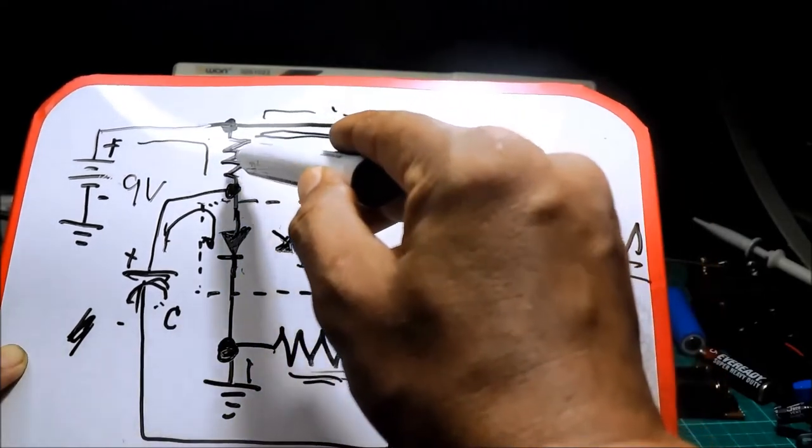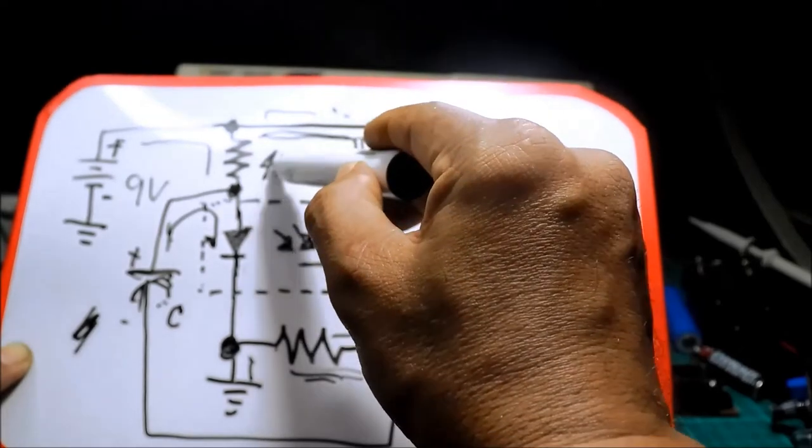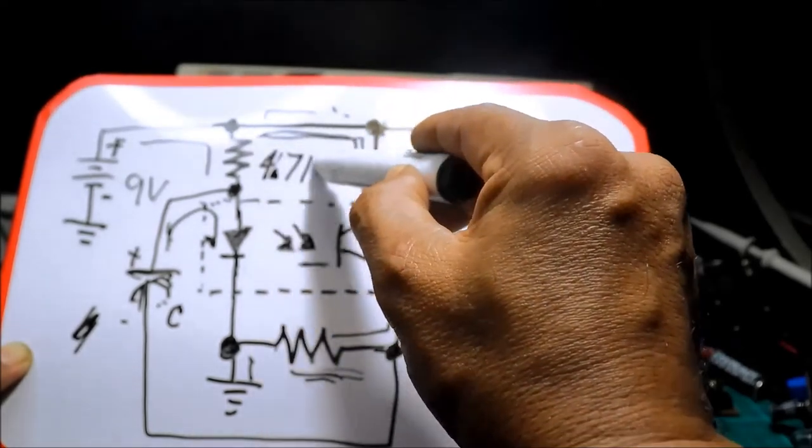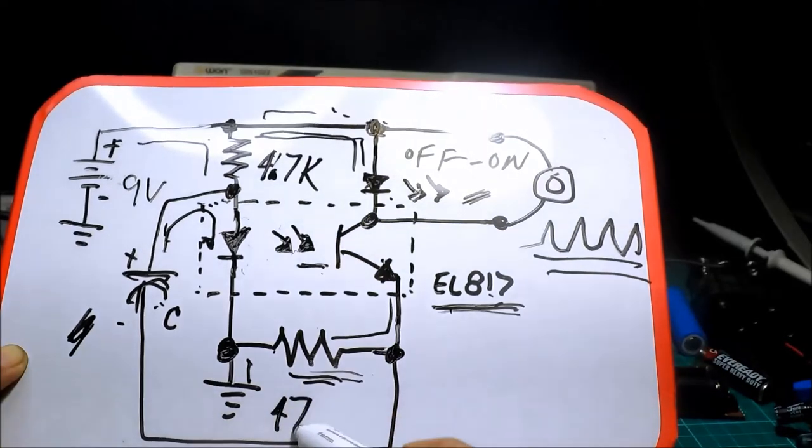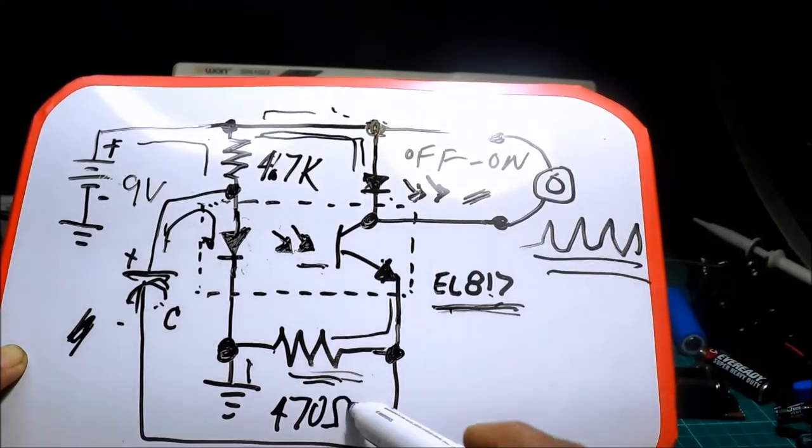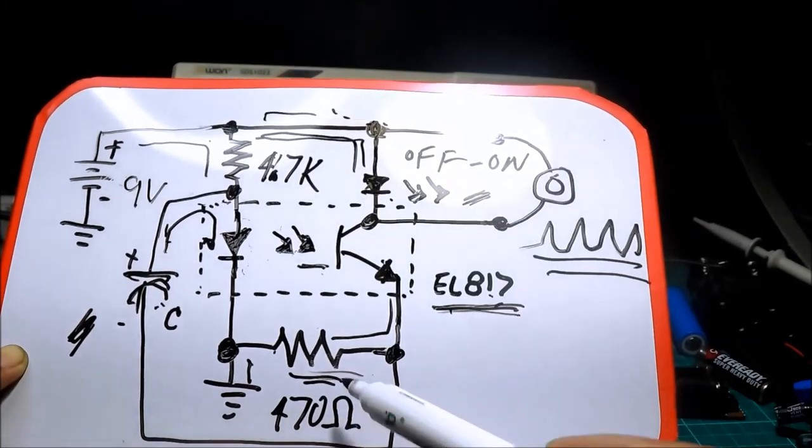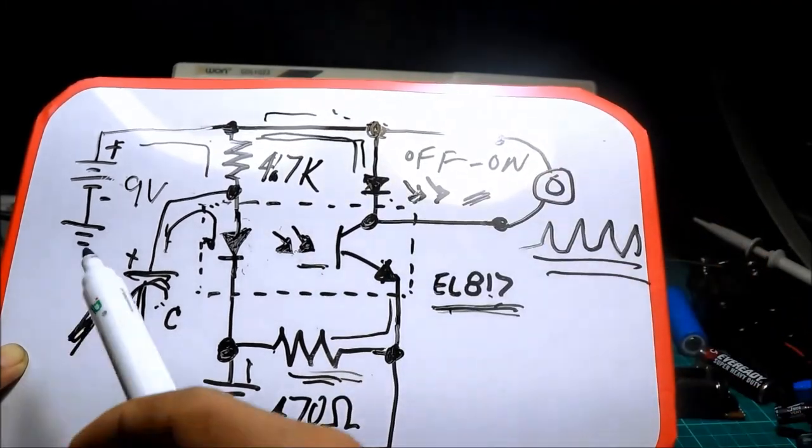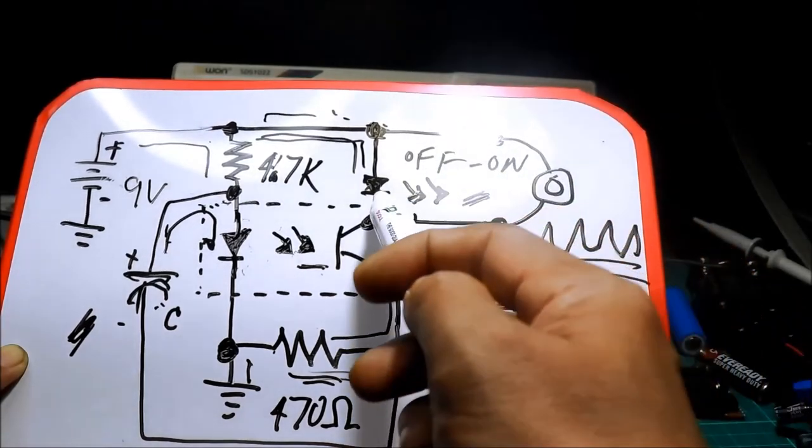Pag pinalitan mo yung value ng resistor dito. 4.7K. Dito naman, 470 ohms. Yan ang value ng resistor. So, kaya nag-on, off, on, off, on ang LED.